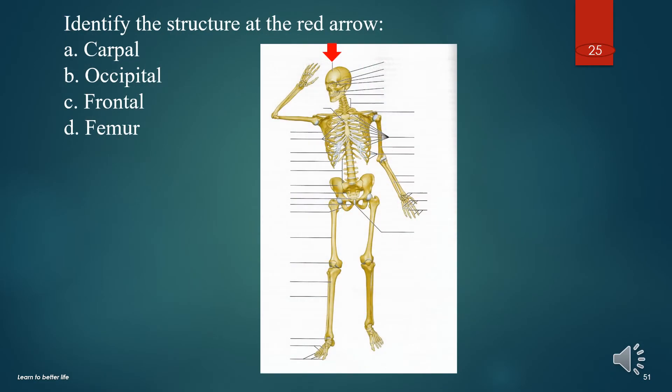Identify the structure at the red arrow. A. Carpal. B. Occipital. C. Frontal. D. Femur. The answer is C. Frontal bone.